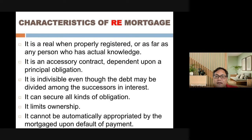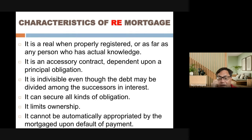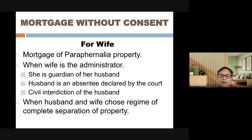The property cannot be automatically appropriated by the mortgagee upon default of payment. This concept is known as pactum commissorium — a provision which allows the creditor to automatically appropriate upon himself the property upon default of the debtor. This is one of the characteristics of real estate mortgage: the non-appropriation provision.